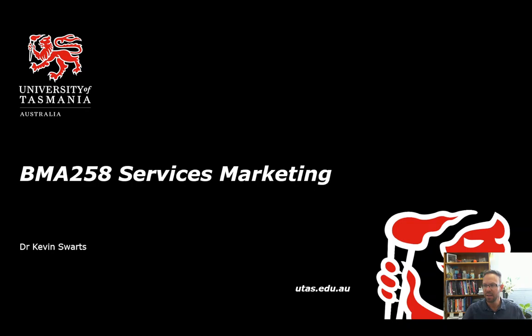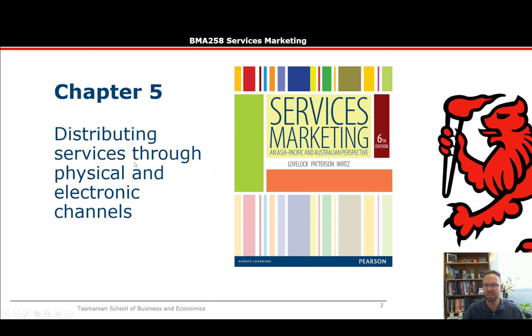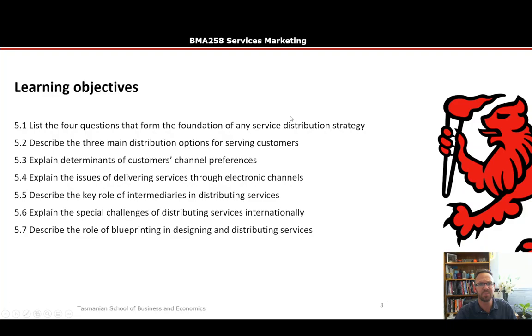Hello and welcome to BMA258 Services Marketing. This week we'll be dealing with chapter 5 in our textbook, which is about distributing services through physical and electronic channels. This distribution is the place part of the extended marketing mix — the P for place.